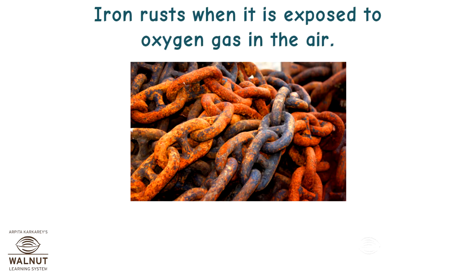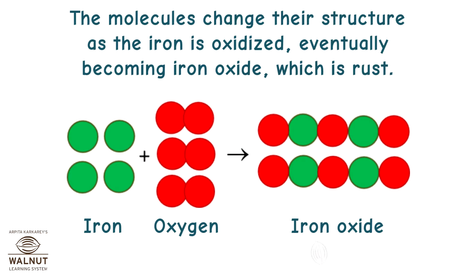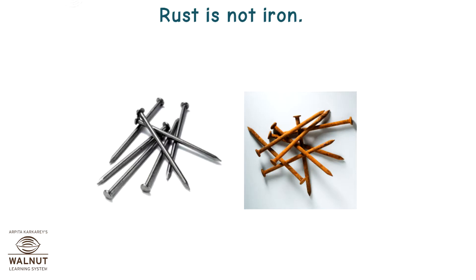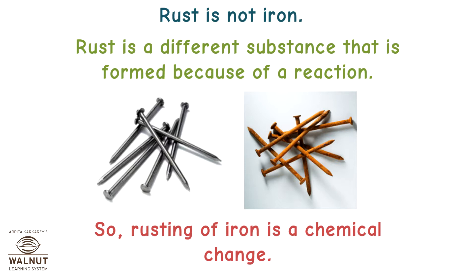Iron rusts when it is exposed to oxygen gas in the air. You can watch the process happen over a long period of time. The molecules change their structure as the iron is oxidized, eventually becoming iron oxide, which is rust. Rust is not iron — it is a different substance formed because of a reaction. So rusting of iron is a chemical change.